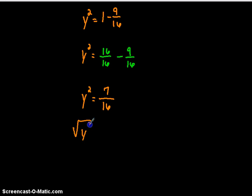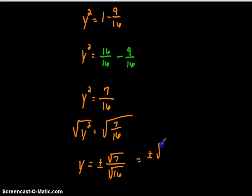So next, you take square root of both sides. You get square root of y squared, and then square root of 7 sixteenths. So basically, your final answer with y would be y equals positive or negative square root of 7 divided by square root of 16, which equals square root of 7 over 4.